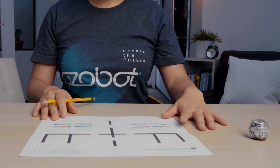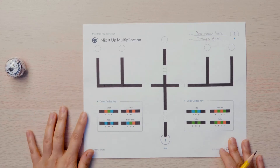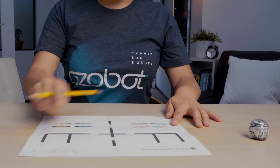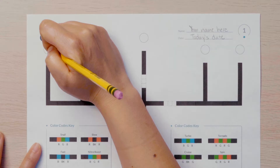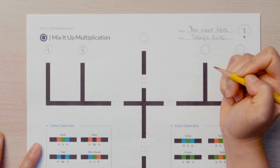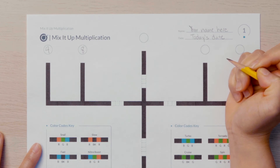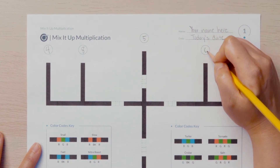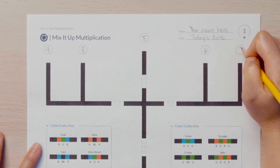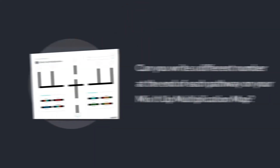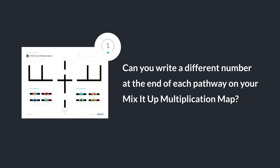Let's get started. Get out your Mix It Up Multiplication map. You'll see Ozobot has 5 possible pathways to follow. At the end of each pathway, you'll need to write a number. I'm going to choose numbers 4 through 8. You can choose your own numbers — any numbers between 1 and 9. Can you write a different number at the end of each of your pathways on your Mix It Up Multiplication map?